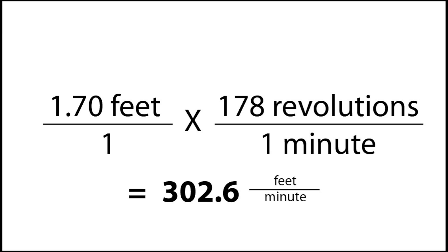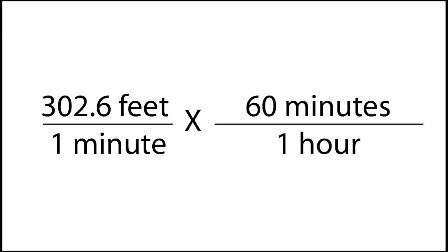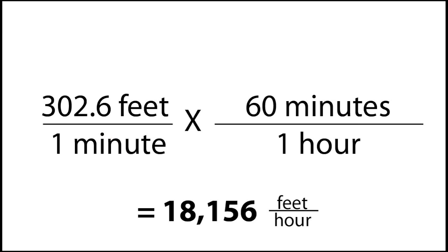But we want the answer in hours, not minutes. So we take 302.6 feet over 1 minute and cross-multiply times 60 minutes over 1 hour. This cancels out our minutes, leaving us with 302.6 times 60. Our answer is 18,156 feet per hour.